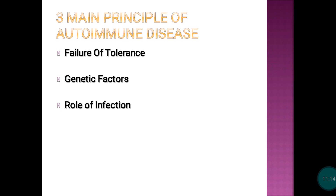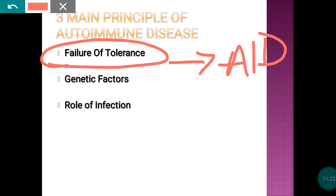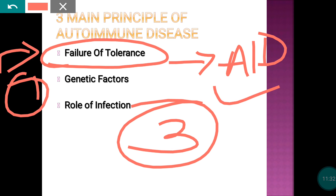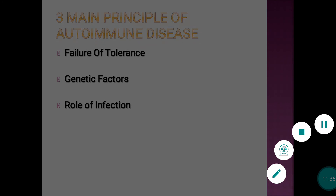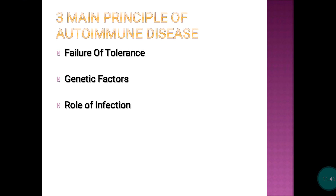If there is failure of tolerance, autoimmune disease can develop. There are three basic principles of autoimmune disease development: first, failure of tolerance; second, genetic and environmental factors; and third, the role of infection.